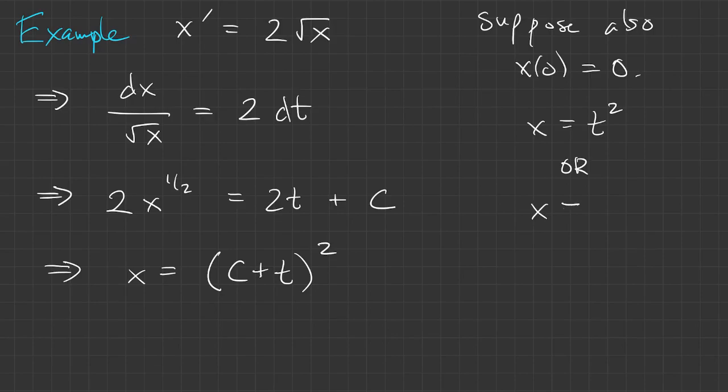But also, 0 is an equilibrium solution. That means the solution to this initial value problem isn't unique. That's another thing that can't happen with linear problems.